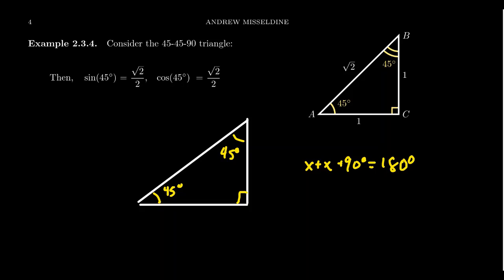Subtracting 90 from both sides, you get that 2x equals 90 degrees. Divide by 2, you see x equals 45 degrees. So if it's an isosceles right triangle, the two non-right angles have to be 45 degrees.